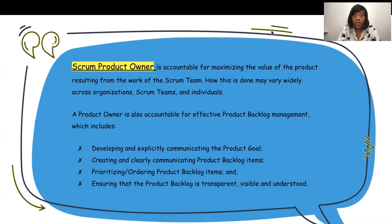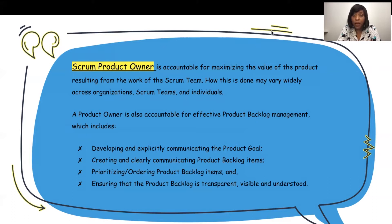This also includes prioritizing and ordering the product backlog items — making sure you're putting the proper features and functionality in the order they should be executed, and ensuring that falls in alignment with the overall strategy of the organization. The product backlog must be transparent, visible, and understood. All team members need to know what that guiding light is: where they're going, how they're going there, and when they're going to get there. As a product owner, you're constantly communicating with all your different team members to make sure they understand what plans of execution need to be happening at what time.